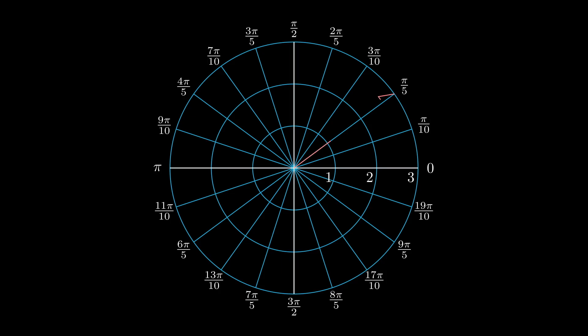Suppose we have this vector on a complex plane, and you want to find every possible expression to define this vector. Well, we know its length is 3, and theta is pi over 5.